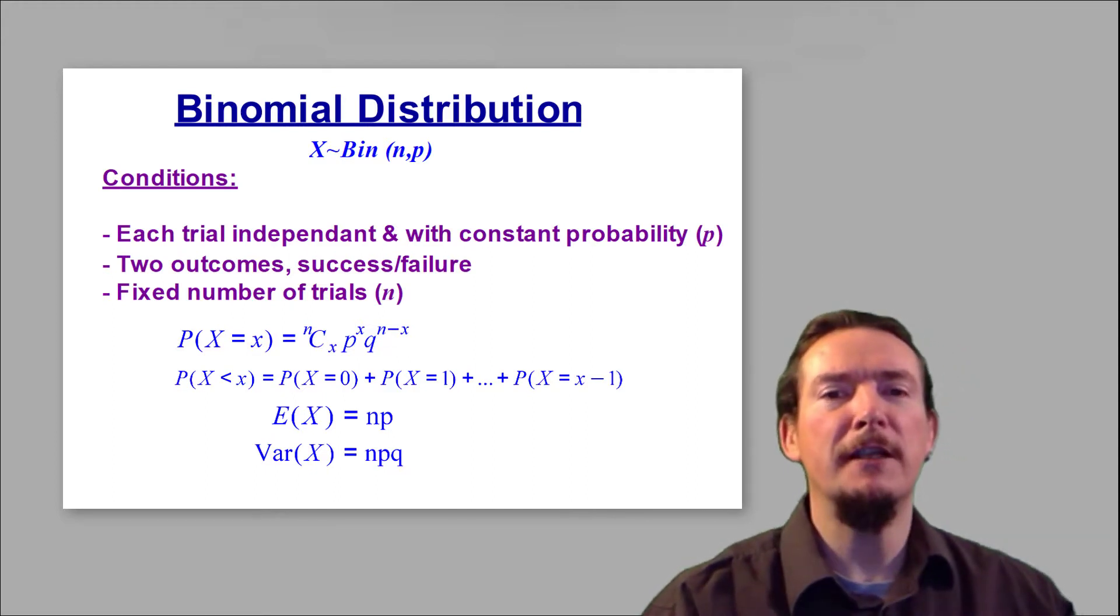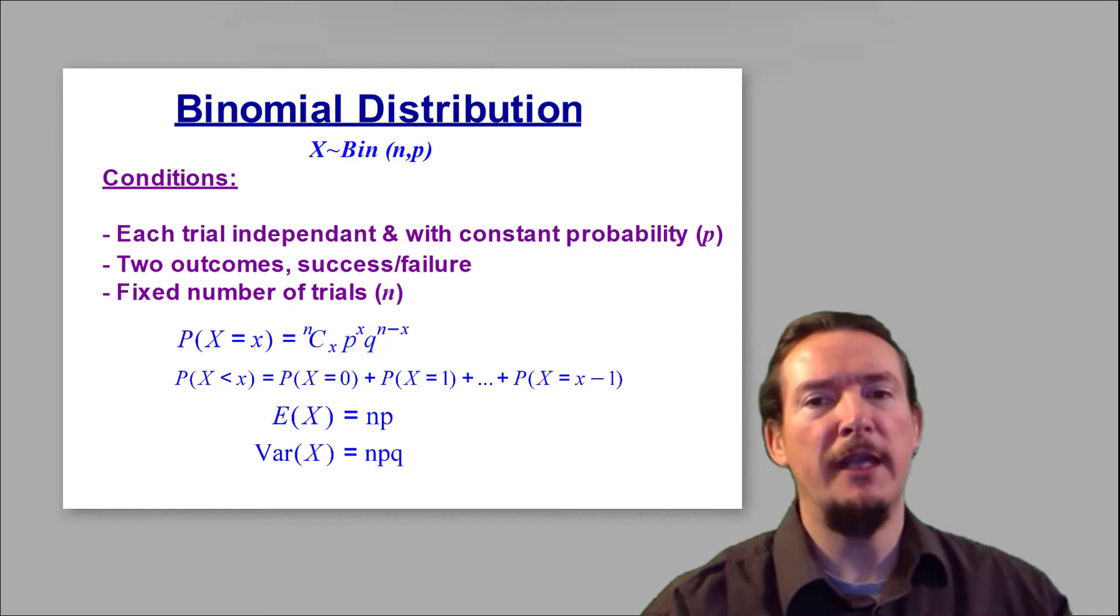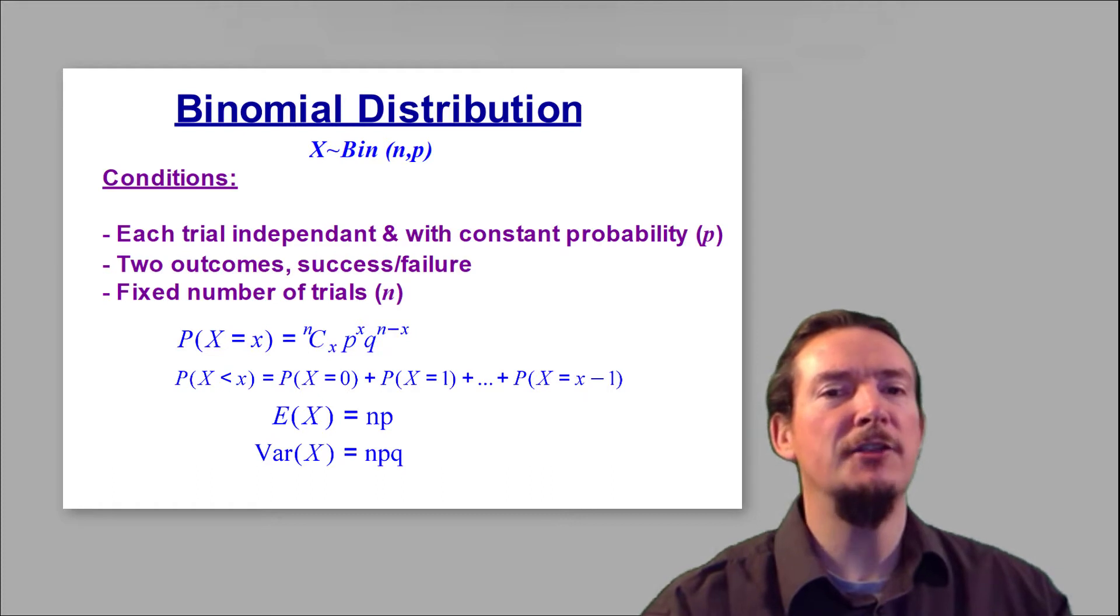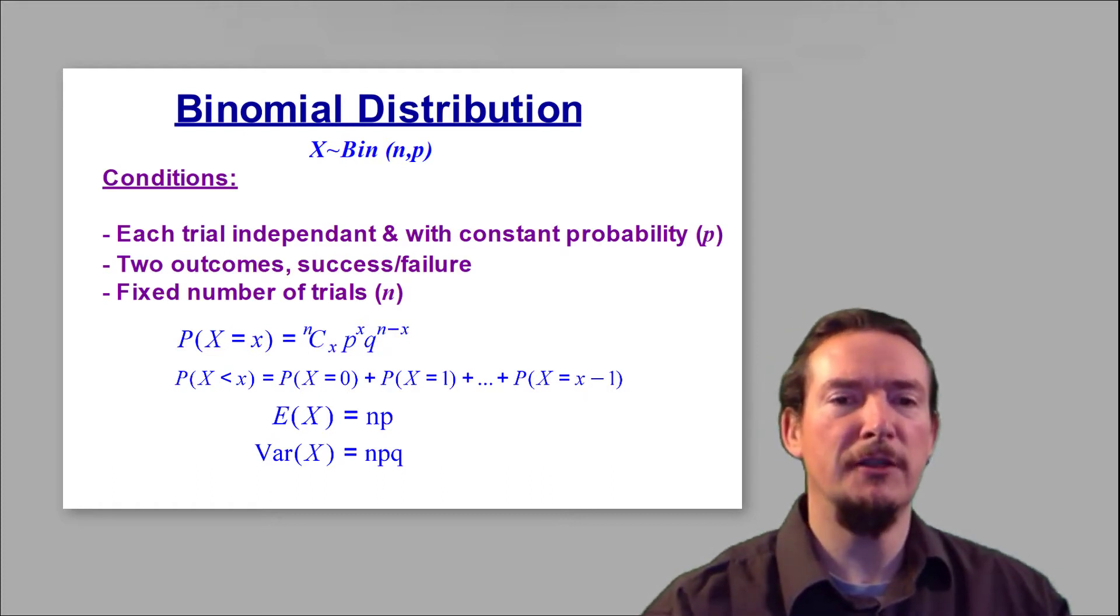Importantly, there should be a fixed number of trials, which we denote with N, and this distinguishes it from the geometric distribution where you instead continue with the trials until you are successful and then you stop.